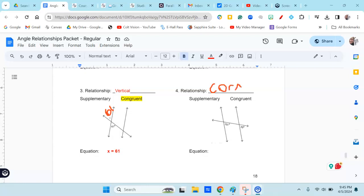Okay, and corresponding angles are the same size. They are congruent. I can look and see that these two angles are both acute in this diagram, so they are congruent to each other. Since they're congruent,